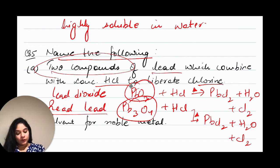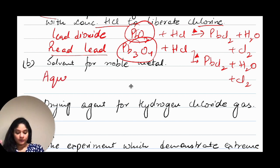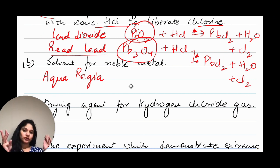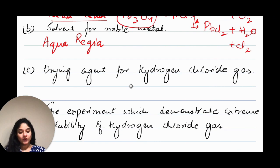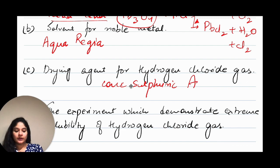The solvent for noble metals is aqua regia — that is three parts of concentrated HCl and one part of nitric acid, a three-to-one ratio. The drying agent for hydrogen chloride gas is concentrated sulfuric acid.